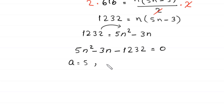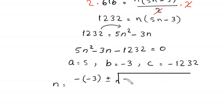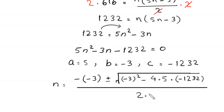This is a quadratic equation where a equals 5, b equals negative 3, and c equals negative 1232. Using the quadratic formula: n equals negative b plus or minus square root of b squared minus 4ac, all divided by 2a. Substituting: n equals 3 plus or minus square root of negative 3 squared minus 4 times 5 times negative 1232, divided by 2 times 5.